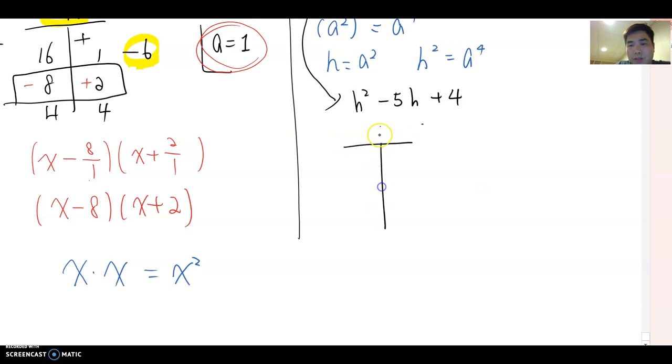Through the t-chart. And then 4 here and minus 5 here. As you see, there is no number, which means a equals 1. Please remember that no number means a equals 1.